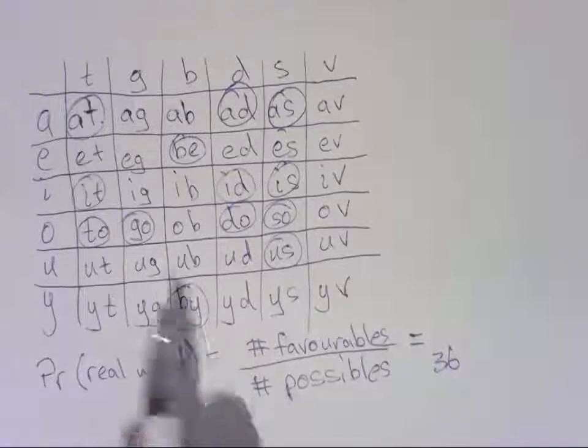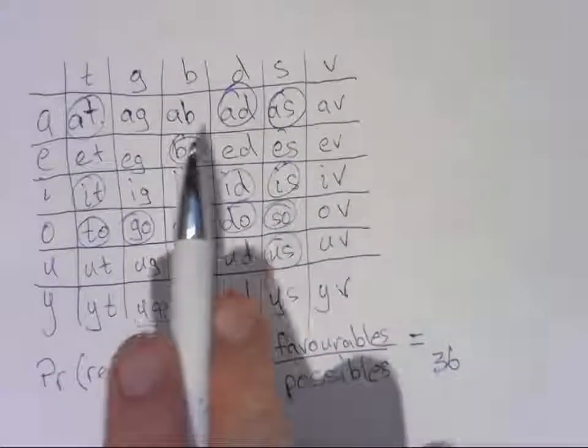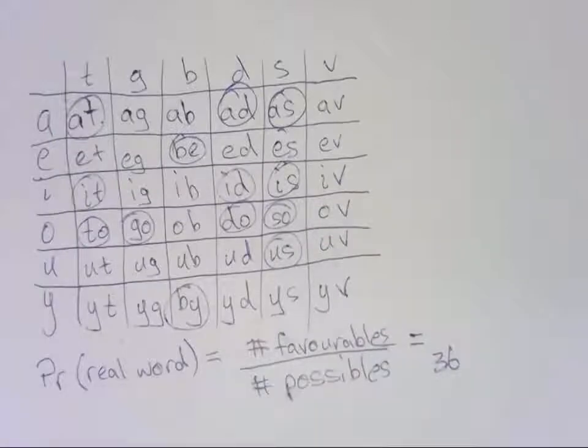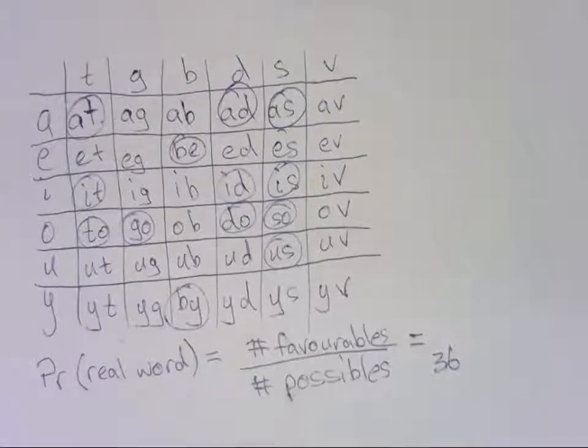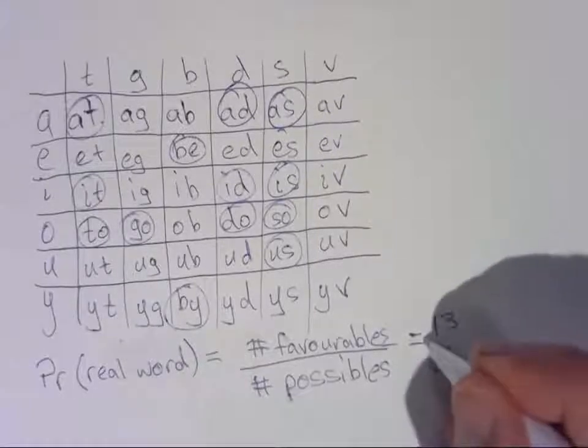So that all together gives us 1, 2, 3, 4, 5, 6, 7, 8, 9, 10, 11, 12, 13 favorable outcomes. 13 possible real words that we could roll here. So that's our number of favorables.